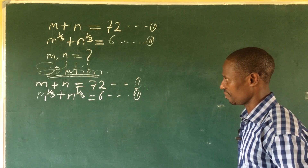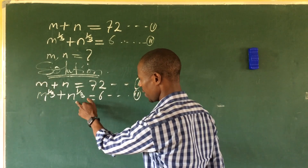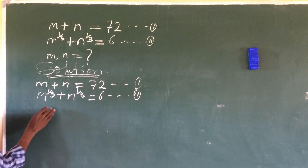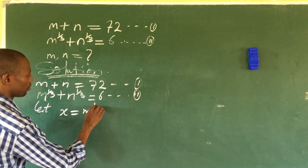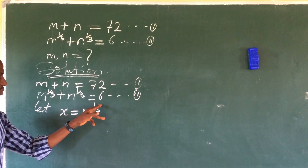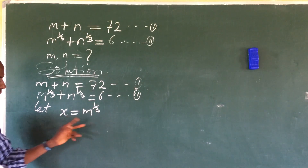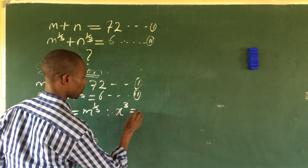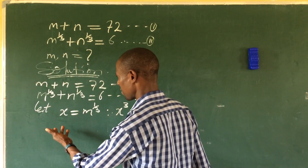What we do first is bring in another variable to represent m^(1/3) and n^(1/3). Let x = m^(1/3). If we take the cube of both sides, we get x³ = m.